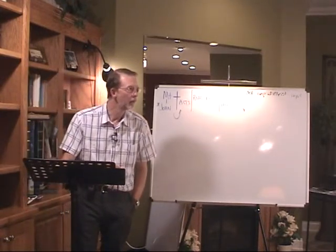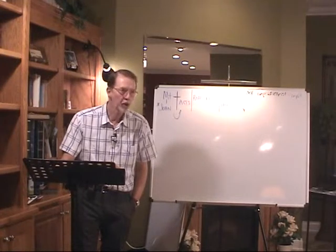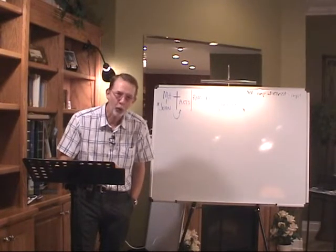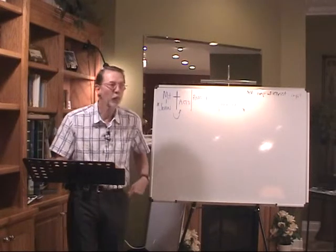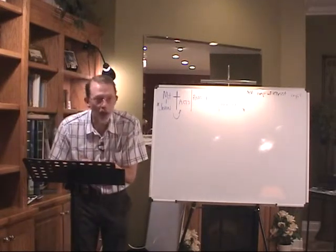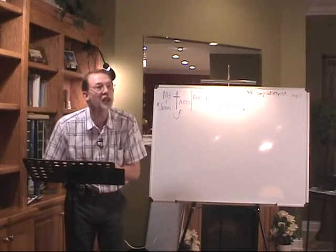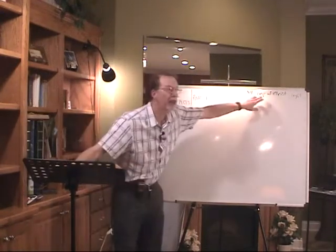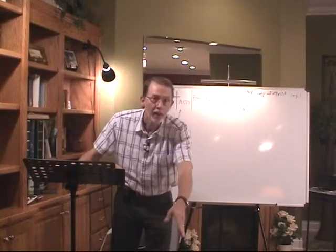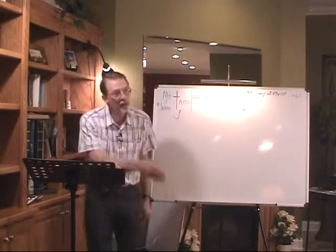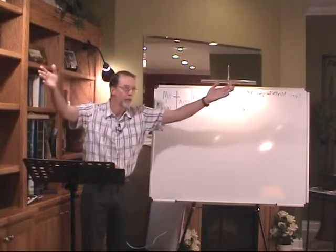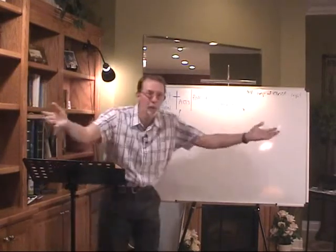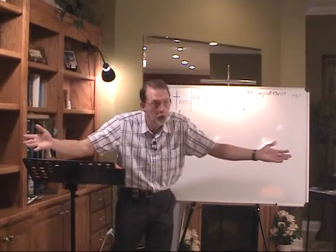Verse 4: 'But as we were allowed of God to be put in trust with the gospel, even so we speak, not as pleasing men, but God which trieth our hearts.' Notice the little word 'we.' We is not singular — we is plural. The gospel of God is the gospel referred to here, and he says 'we were allowed of God to be put in trust.' Here's another message committed to more than one person — himself included — but apparently entrusted to others as well.